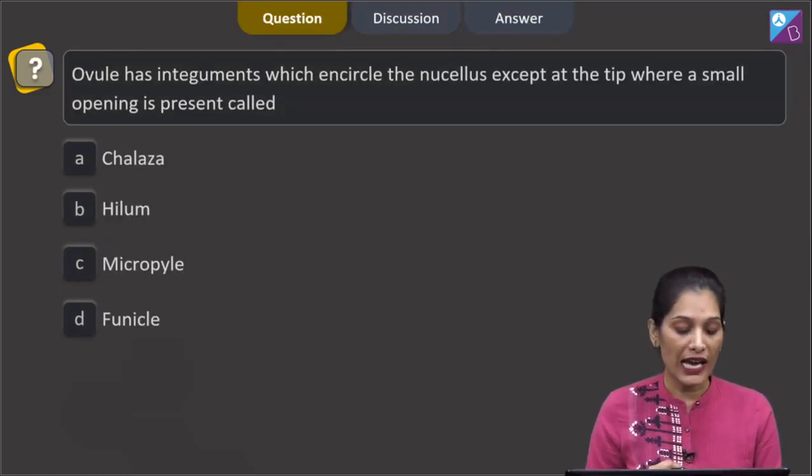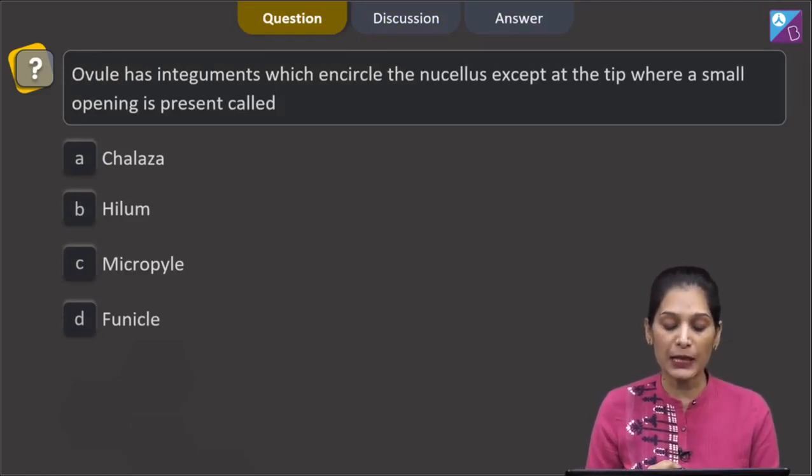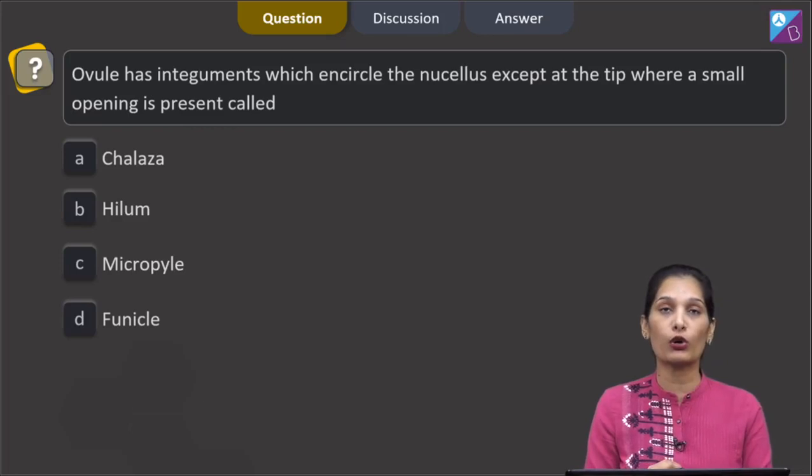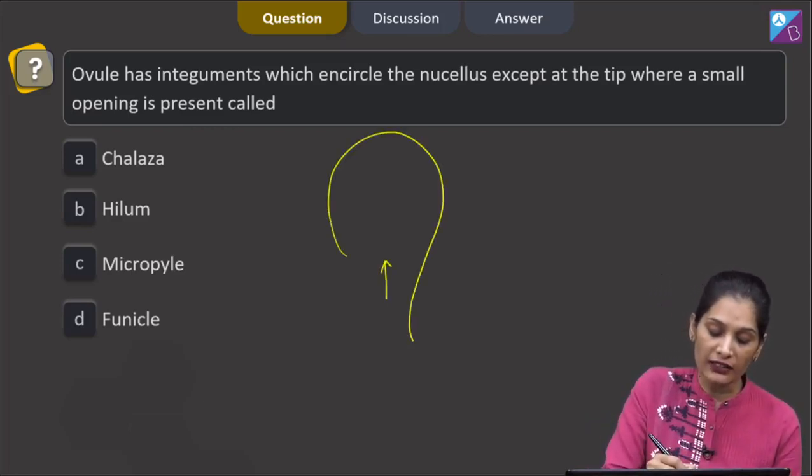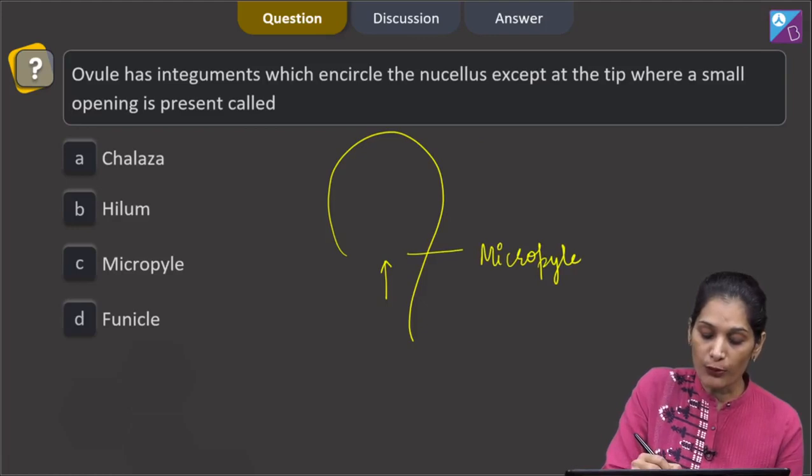Let's pick up the next question. This question says: ovule has integuments which encircle the nucellus except at the tip where a small opening is present called - if you see the structure of ovule, you will find this opening, and this opening is called the micropyle. Opposite to the micropyle you will find the chalaza, which is the base of the ovule.